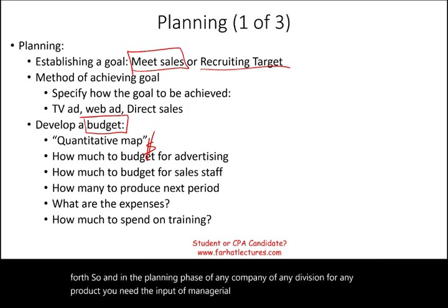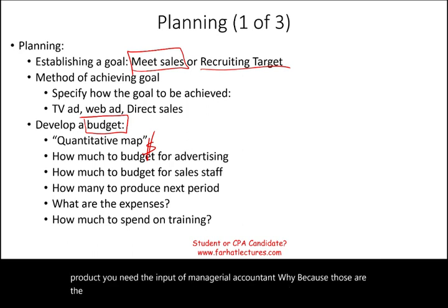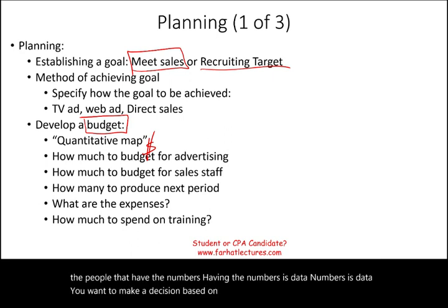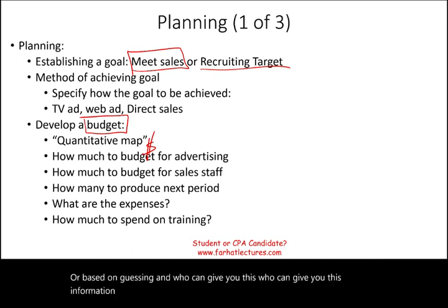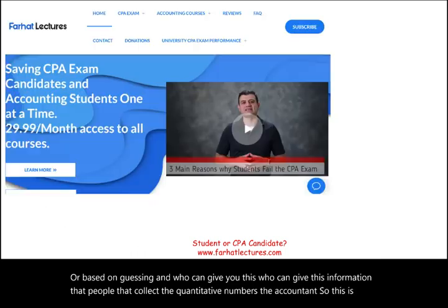Why? Because those are the people that have the numbers. Numbers are data, and you want to make decisions based on data — not based on eyeballing or guessing. Who can give you this information? The people who collect the quantitative numbers: the accountants. So this is part one: planning.